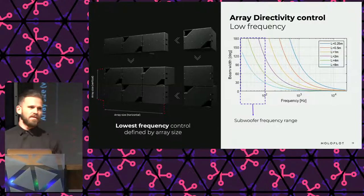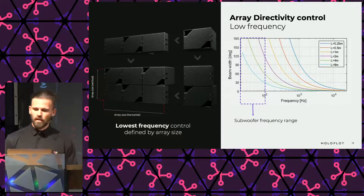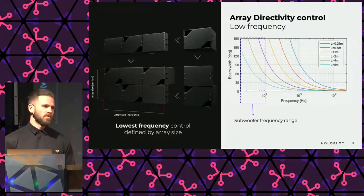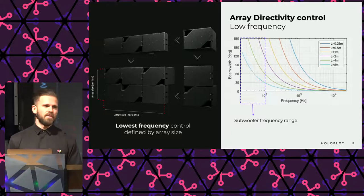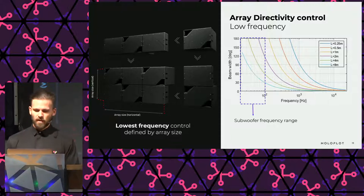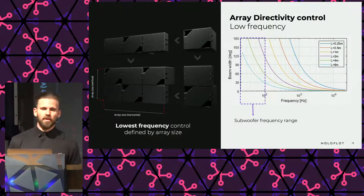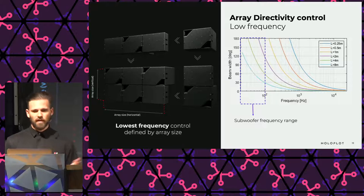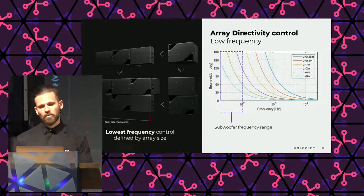To give an example: one could control the opening angle of a 100 Hz frequency beam and narrow it down to a 60-degree opening angle — to achieve that, one would need an array of 4 meters width on the horizontal axis. The same plot can be used to determine the required vertical dimension for controlling the vertical axis.